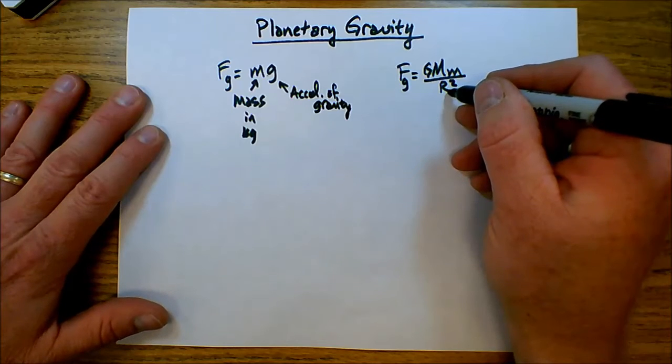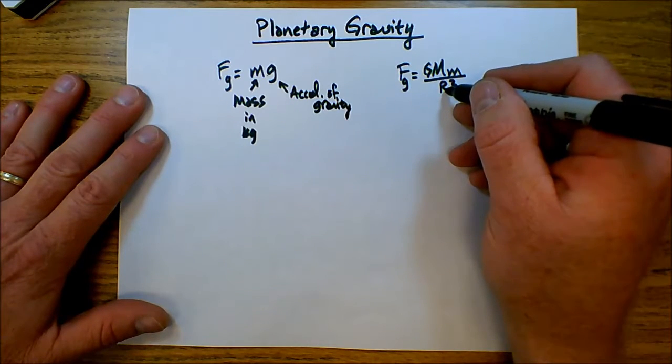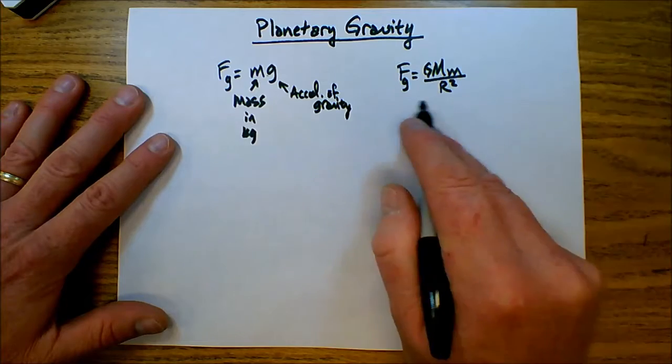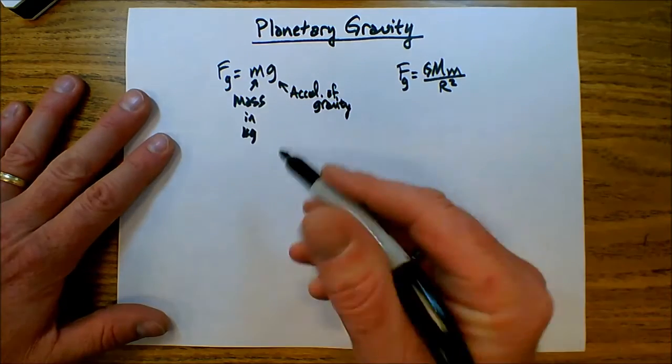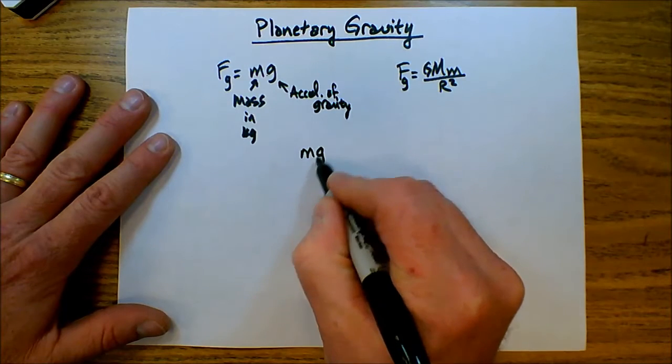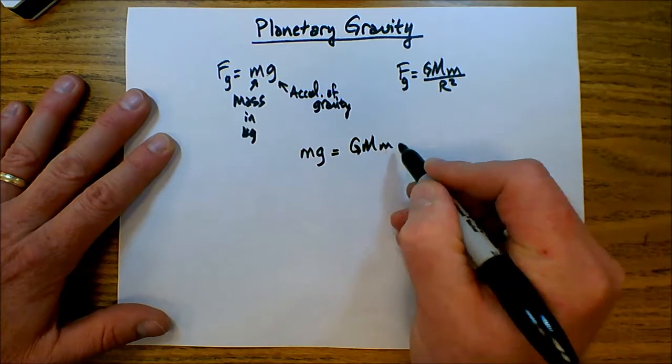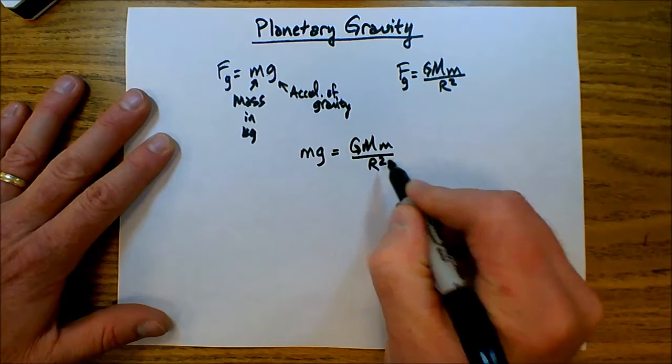Now for an object that's near the surface of a planet, r essentially becomes the radius of that planet. Because both of these formulas give us the force of gravity, we can set them equal to each other. So what I have is mg equals g mass of the planet, mass of the object over r squared.